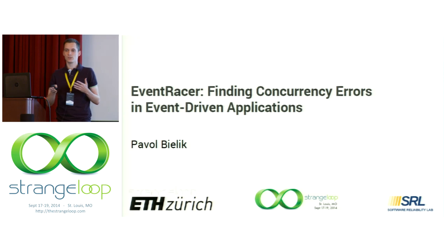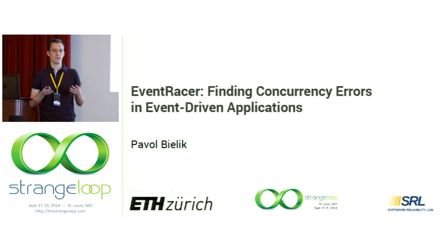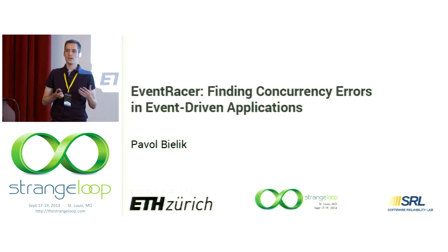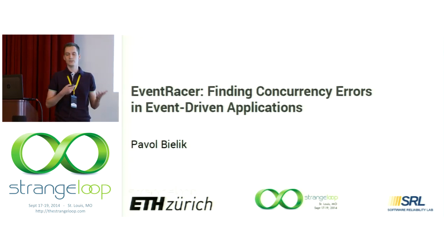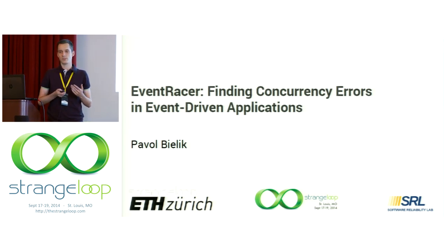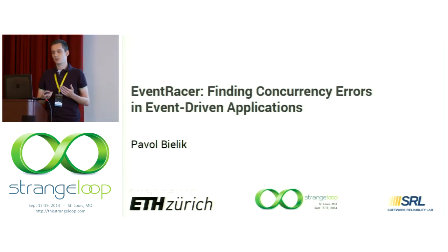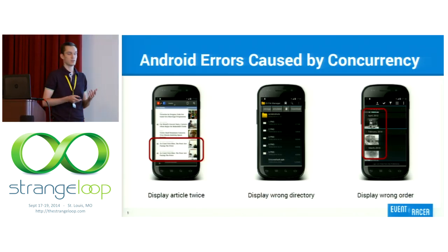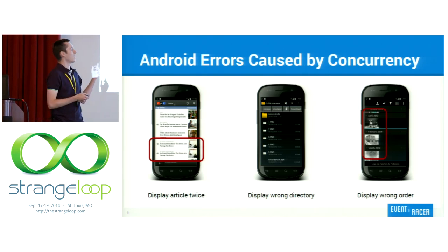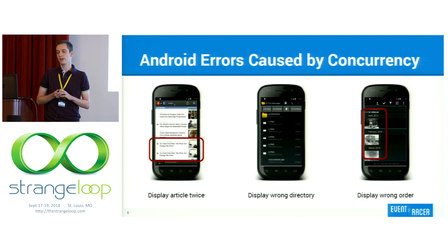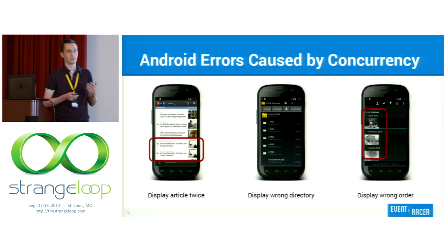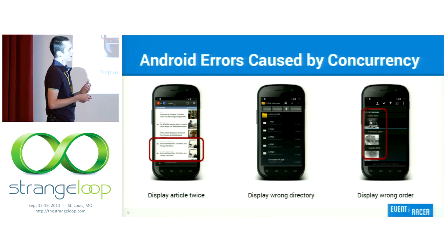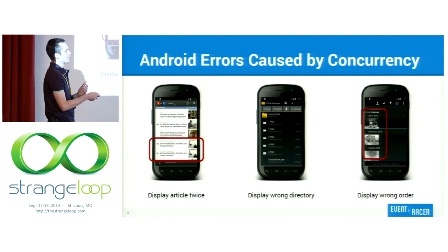The techniques and approach I'm going to present are broadly applicable for many applications, and currently we have implemented it for web pages and for Android. If you look at Android, what we did is we downloaded some popular open source applications, analyzed them with our tool, and you can immediately find errors such as displaying the article twice in the NPR News application, or displaying the wrong directory in the file browser, or displaying images in the wrong order — where they were supposed to be sorted by date but we see March 2014, then February 2014, then April 2014.